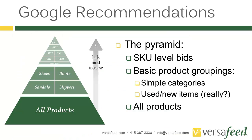More on Google's recommended best practices. At the top of this pyramid, their idea is that you set a few SKU-level bids for products you might be very interested in or that are very expensive. You'll then have some basic bids in the middle — if you were selling shoes, something like shoes, boots, sandals, slippers. At the bottom, you have one all-encompassing product target that's usually a relatively low bid, like 15, 20, 30, or 40 cents. For each of these pyramid levels, the bids must increase, so your SKU bids are more than your grouped bids, which are more than the all-products bid at the lower value.